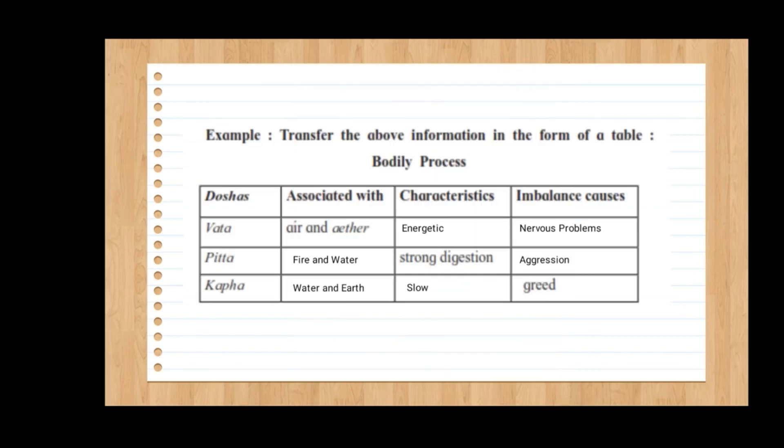We will see the same example — the same passage — now in table form. Transfer the above-mentioned information into the form of a table. The table is about bodily processes. In the first column we have doshas, then associated with, characteristics, and imbalance causes. Things highlighted in bold are written for you; the things written in smaller writing are filled in for your knowledge. Some points you get already in the paper — those you copy out. The things not there, you have to write.